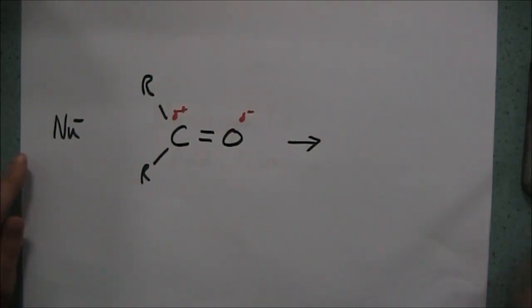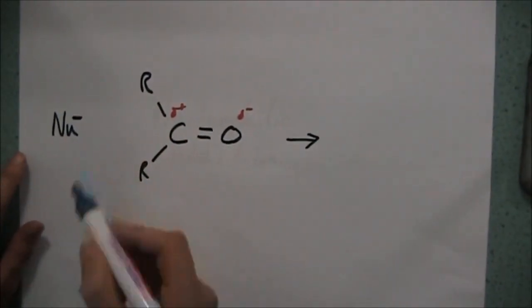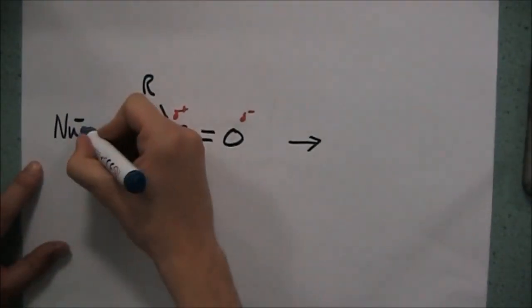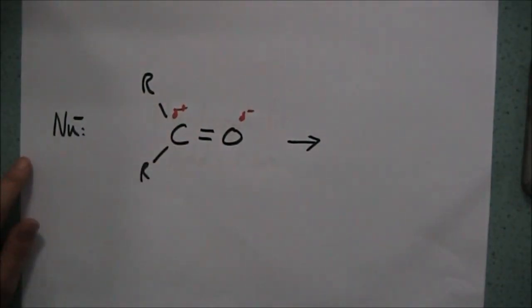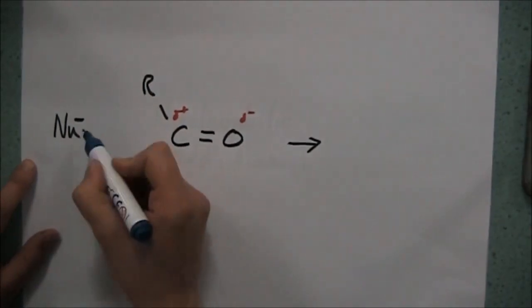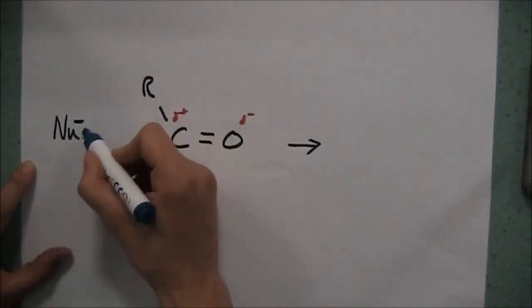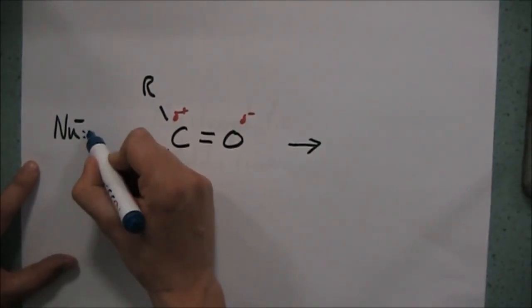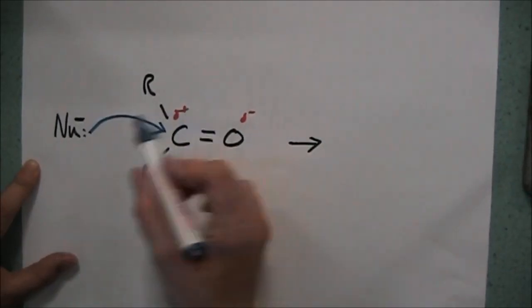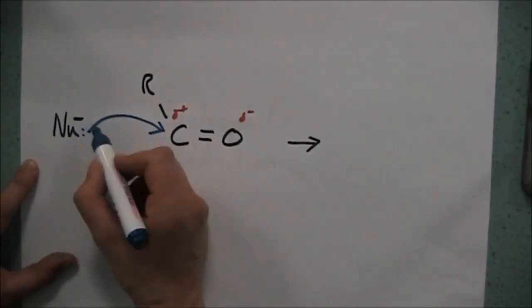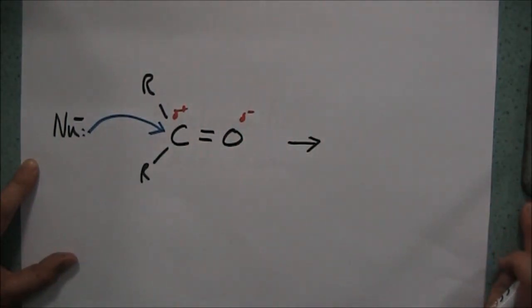First of all, our nucleophile is going to have a negative charge of some description, or at least a lone pair, and so if we have a lone pair or a negative charge, our arrow has to come from either the center of the lone pair or from the negative charge. This pair of electrons is going to form a new bond between the nucleophile and that delta plus carbon atom. The electrons in the nucleophile are attracted by the electron deficient center on the carbon.